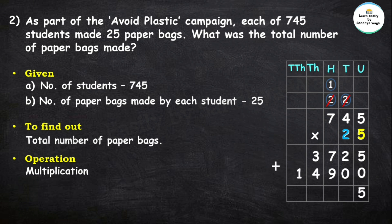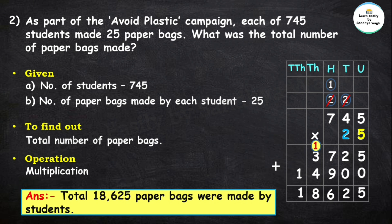Now the addition: 5 plus 0 is 5, 2 plus 0 is 2, 7 plus 9 is 16 — write 6 and carry over 1. 3 plus 4 is 7, plus this 1 is 8. So here our final answer is: total 18,625 paper bags were made by students.